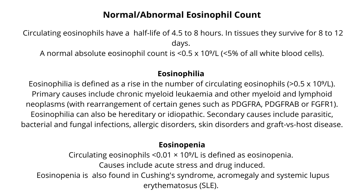Circulating eosinophils less than 0.01 × 10⁹ per liter is defined as eosinopenia. This could be caused by acute stress or it may be drug-induced. Eosinopenia is also found in Cushing's syndrome, acromegaly, and systemic lupus erythematosus.